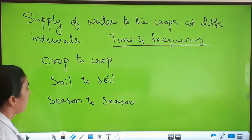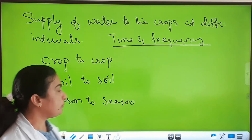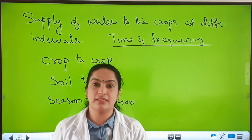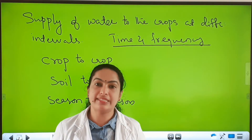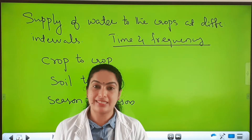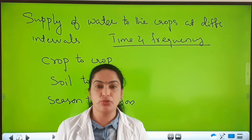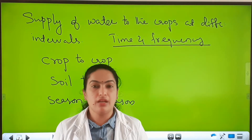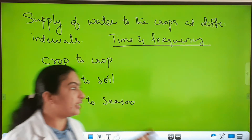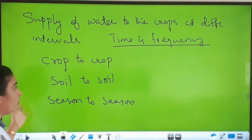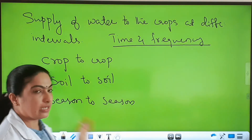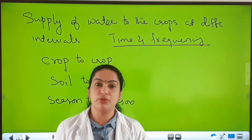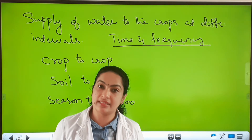In the soil-to-soil phase, some soil has water-retaining capacity and some does not. For such soil without water-retaining capacity, farmers need to supply more water, so the time and frequency also varies there.